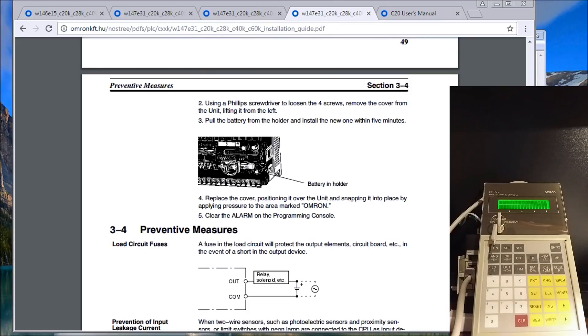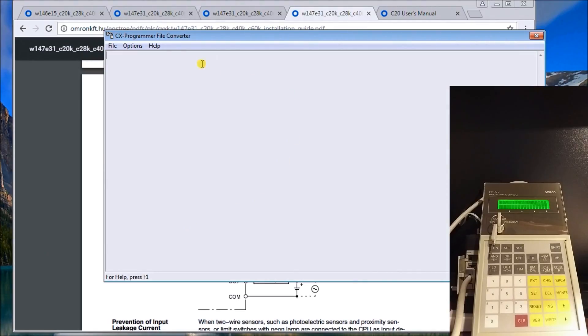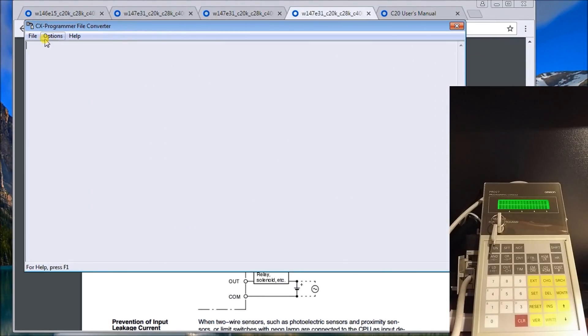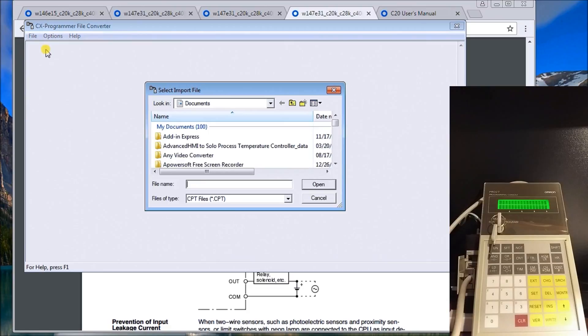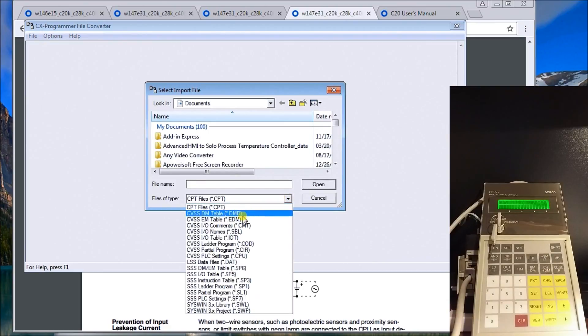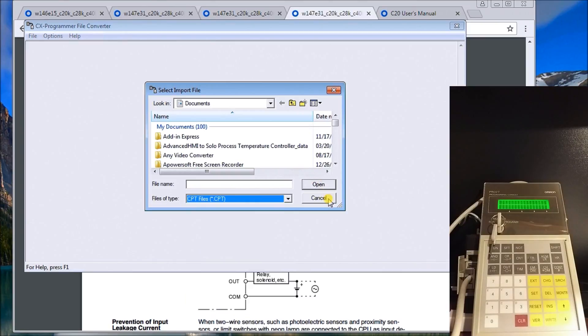Omron actually provides in their latest software package - it's called CX Programmer - a CX Programmer File Converter. It's right in the CX Programming File. So if you go File, Import, Import, and then the type of file you want to import would be either old Syswin, either SSS or LSS Ladder Support Software. Now that'll all depend on if you look at the old files - there'd be a dot for your data files, and that's from the LSS Software. So we call that up, it will convert it for you.